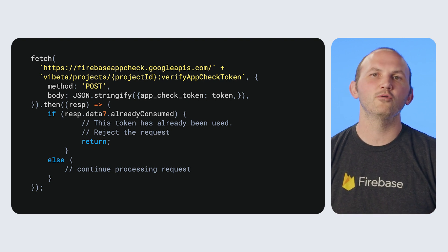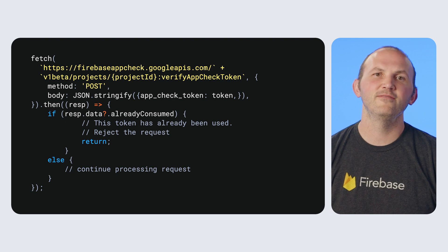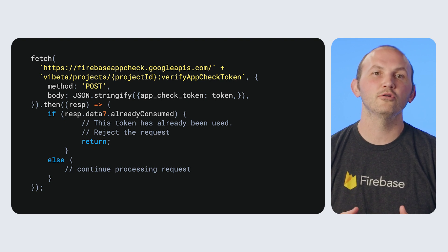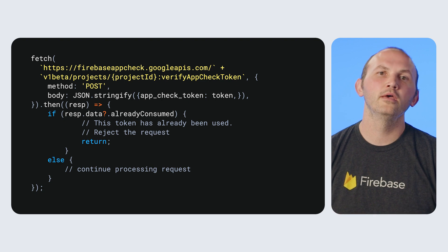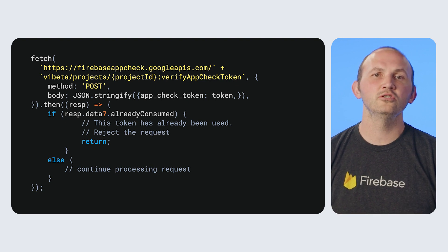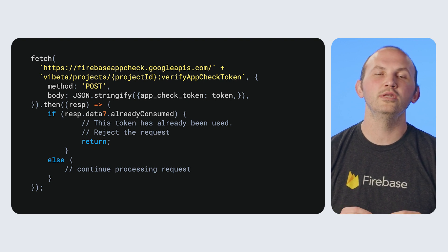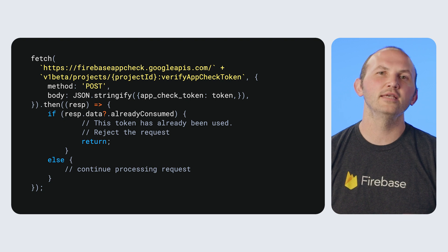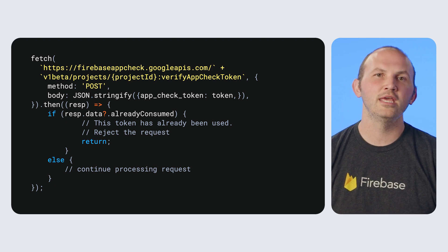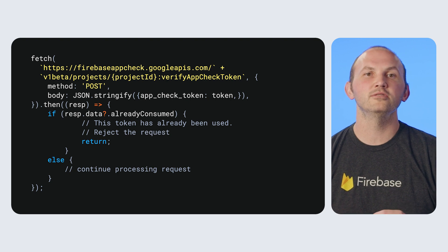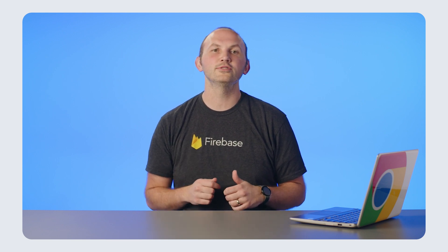If it's present and true, throw out the request as the token is not valid. If the field is absent, continue processing and return a value as normal. The AppCheck token is then consumed and cannot be reused on replay-protected endpoints after this. The token can still be consumed on non-replay-protected endpoints as it does not change any of the metadata associated with the token and the decoding of the token. There you have it. With a little bit of digging into AppCheck, we are able to understand what a token is and how to use it on our non-Admin SDK-enabled services.